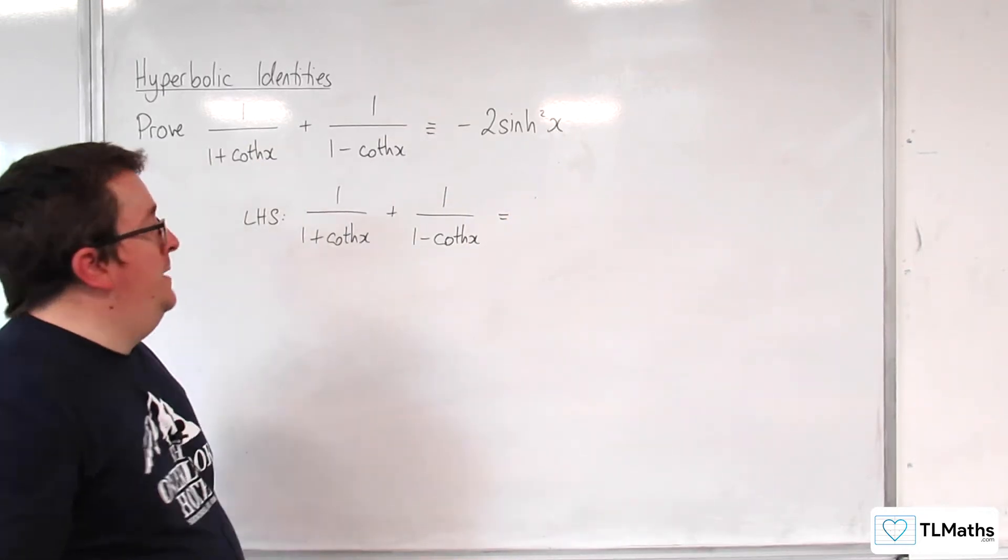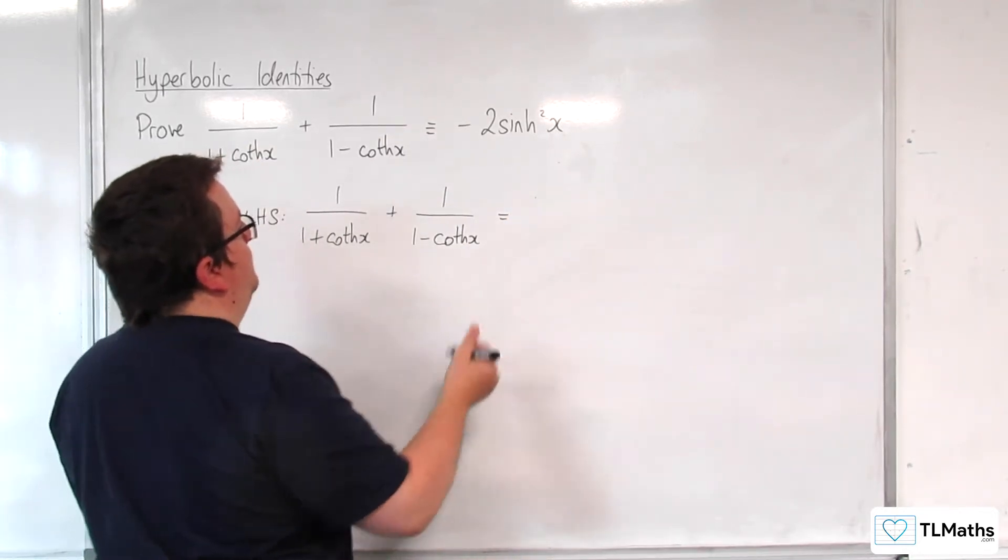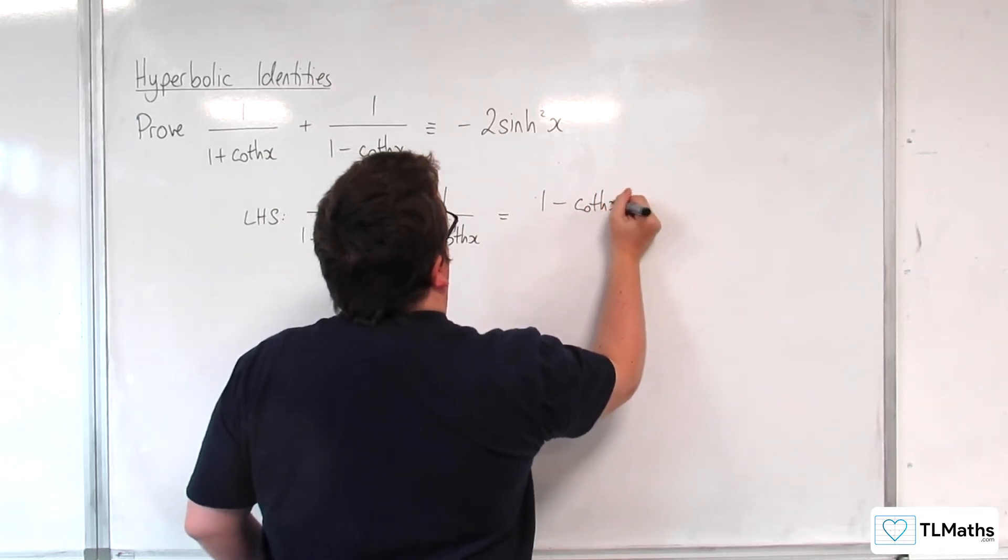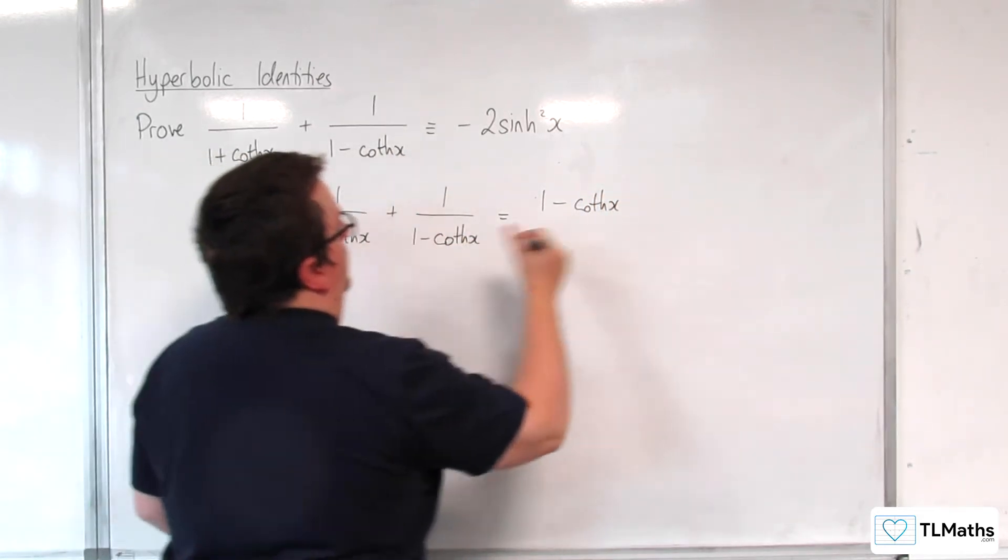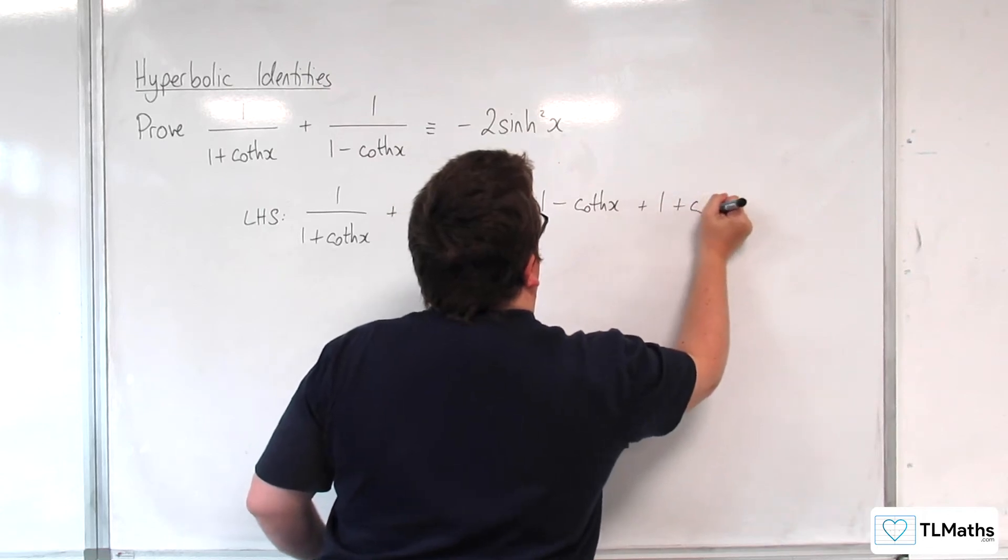So I'm going to cross multiply, add these two fractions together. So we'll have 1 take away coth x plus 1 plus coth x.